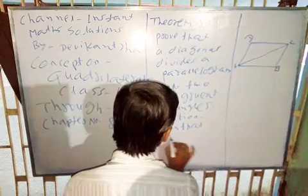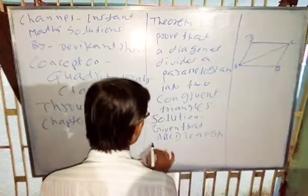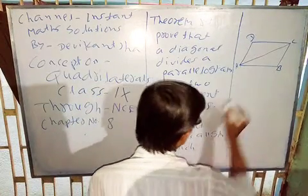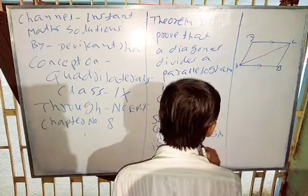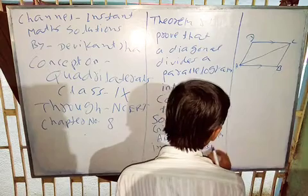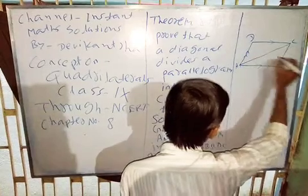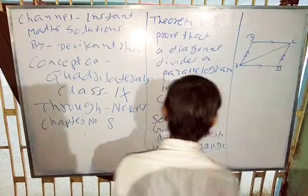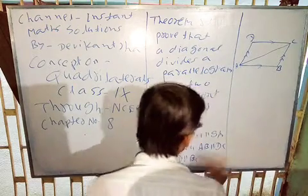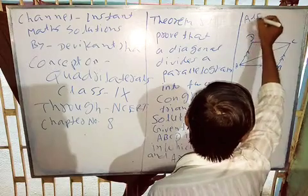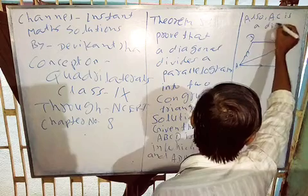ABCD is a parallelogram in which AB parallel to DC and AD parallel to BC. Also, AC is a diagonal.